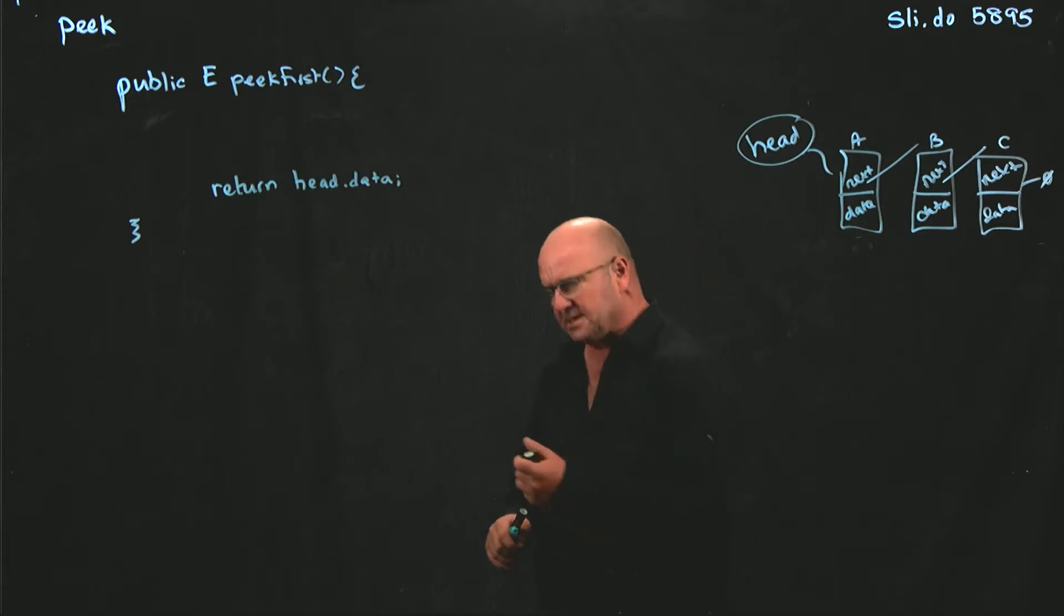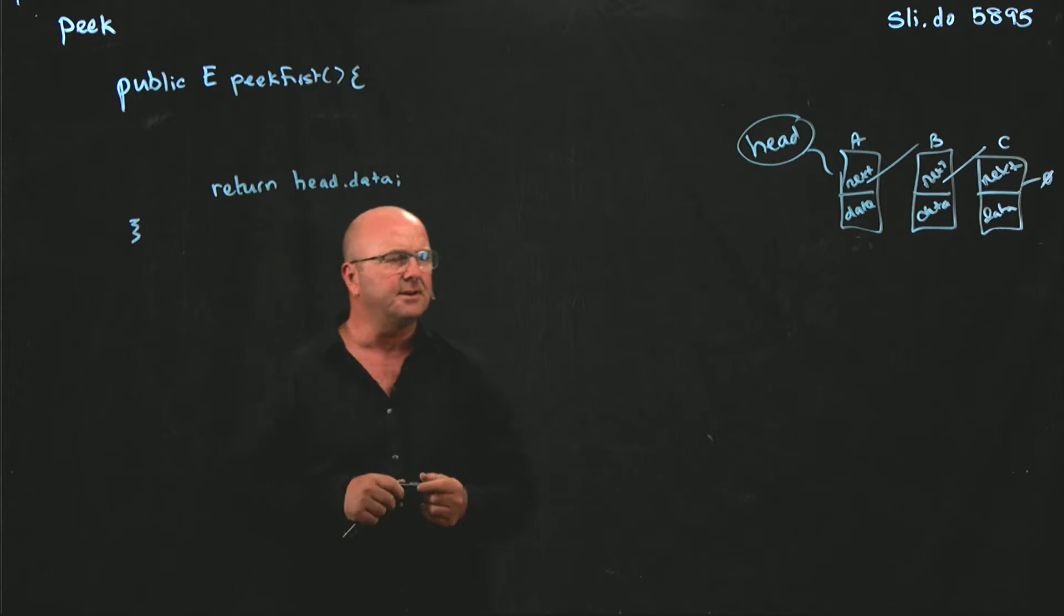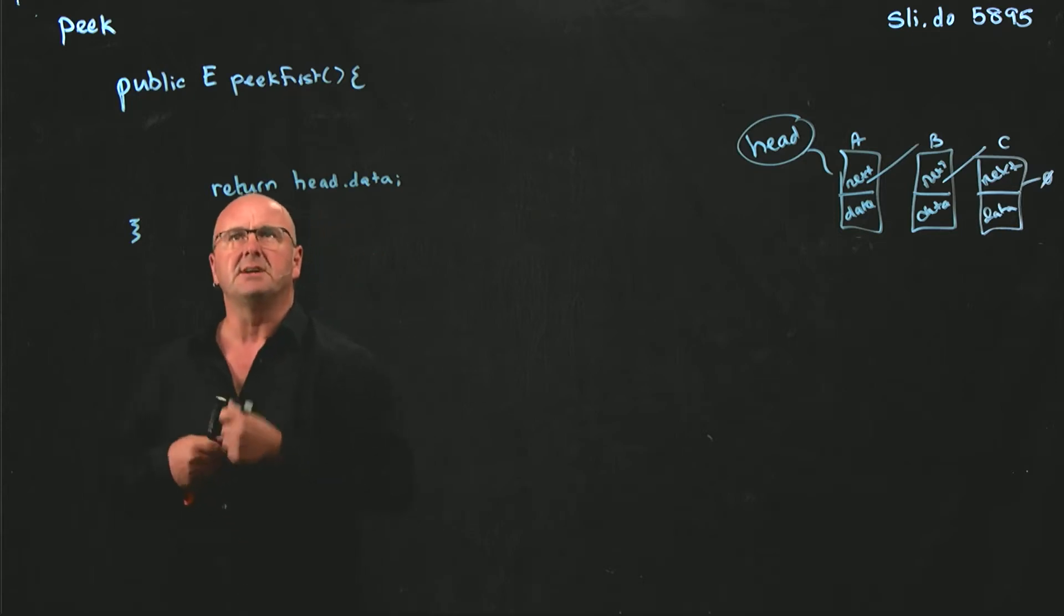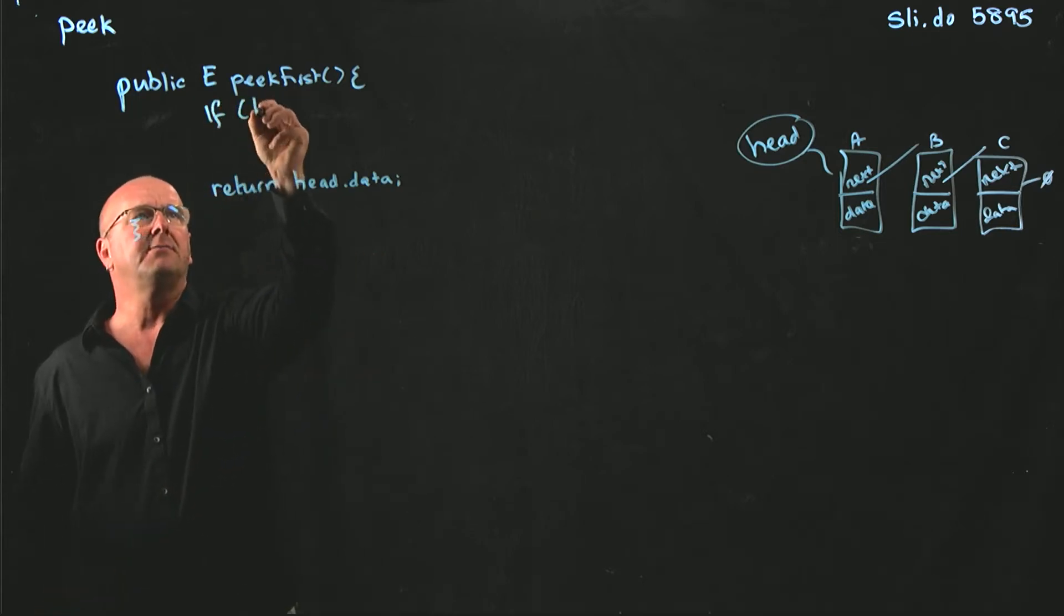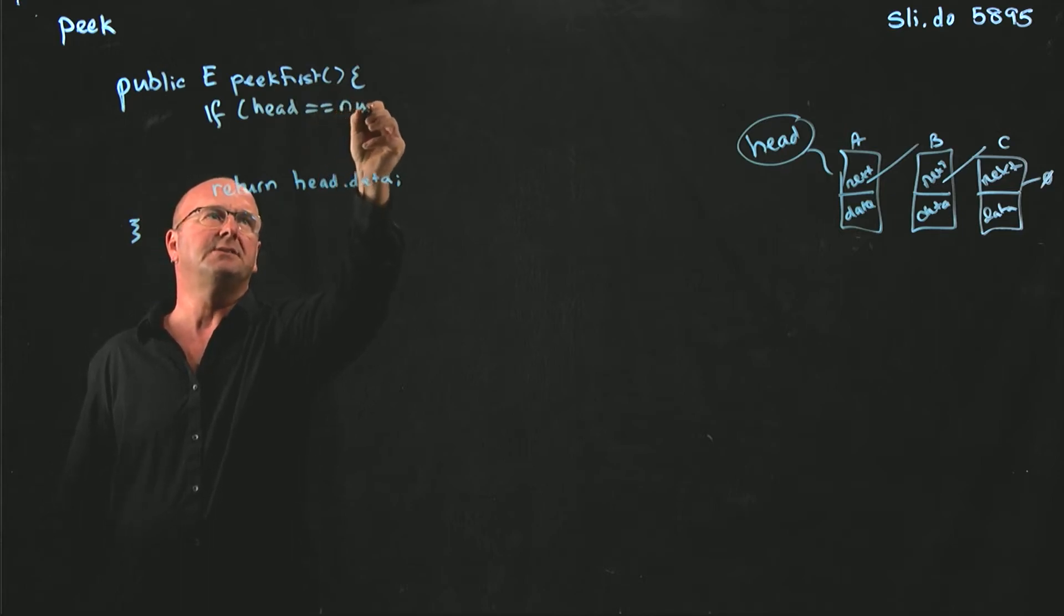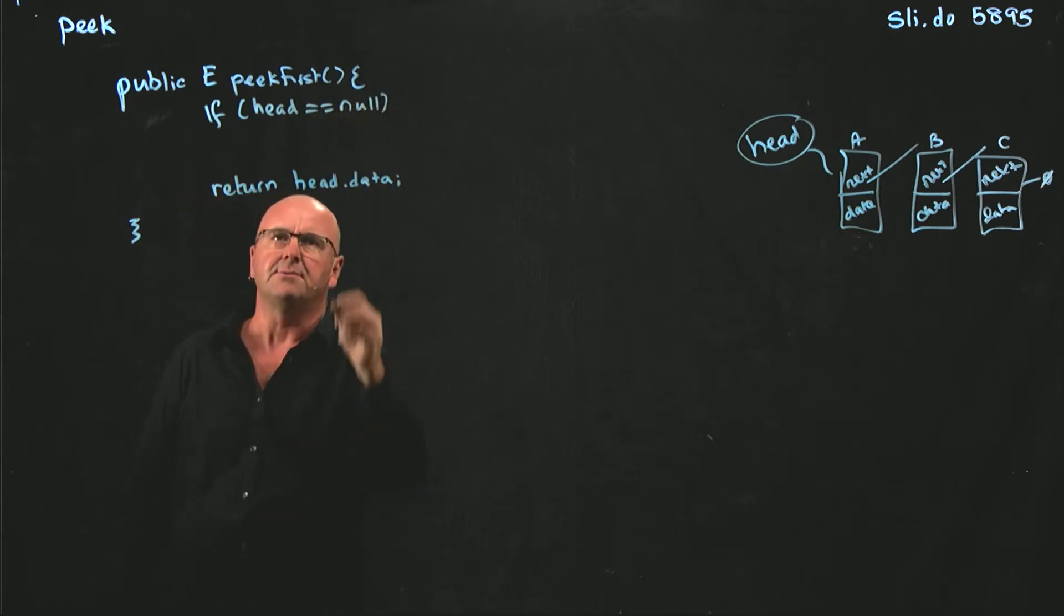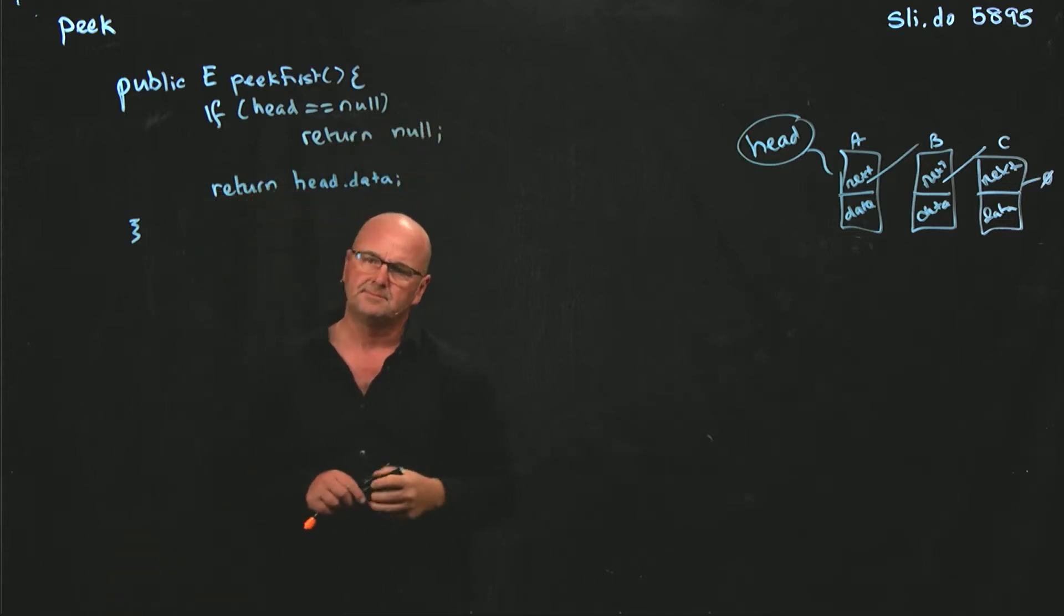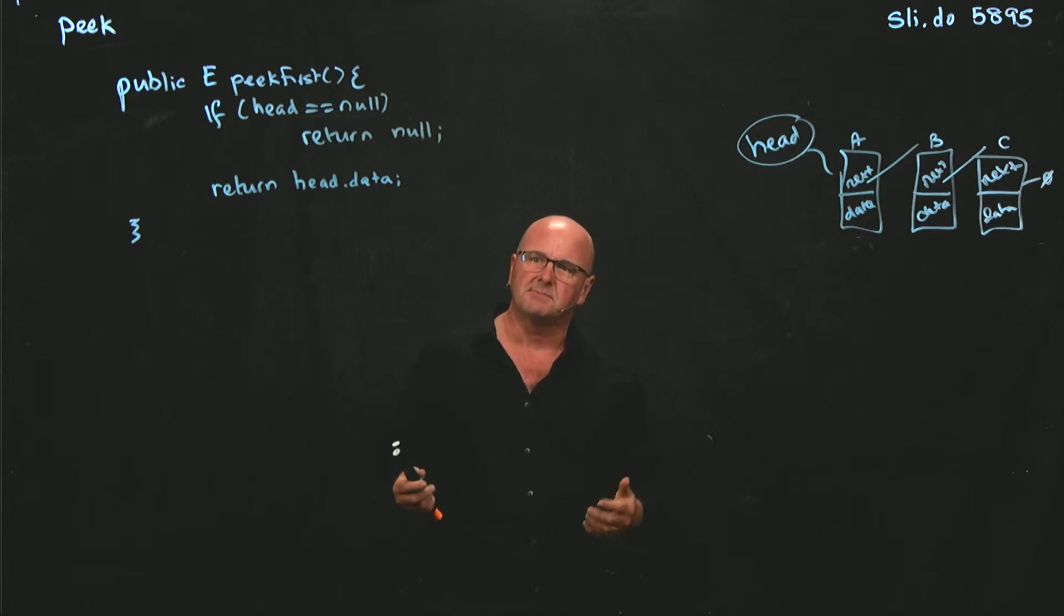An empty list. And what's going to happen if we try and return head.data on an empty list? We're going to get a null pointer exception, and so we need to just make sure that we have something in our list. The easiest way to do that is just to say if head is equal to null, return null. So that's our peak first method, very simple.